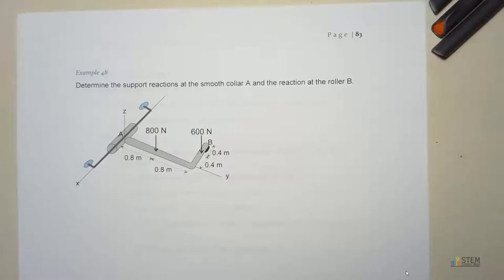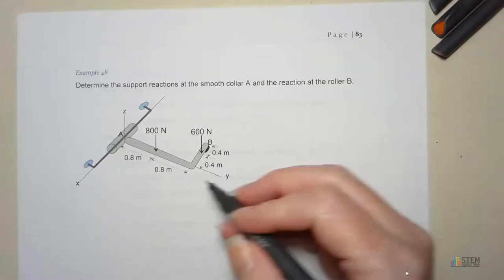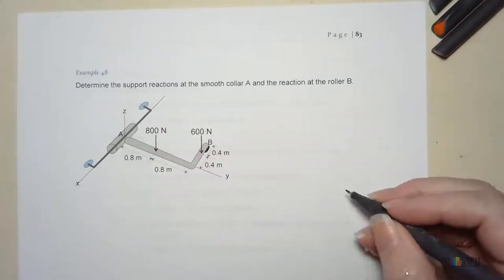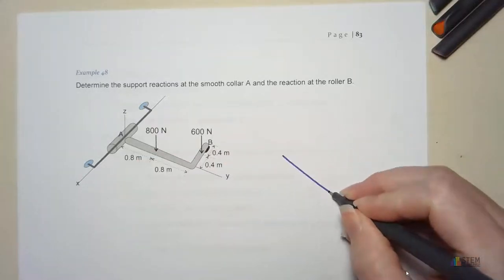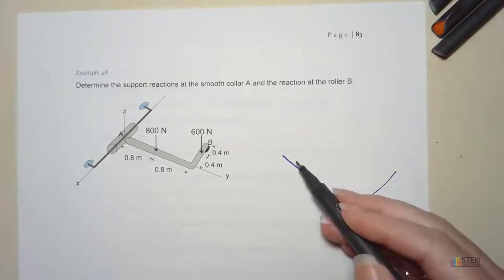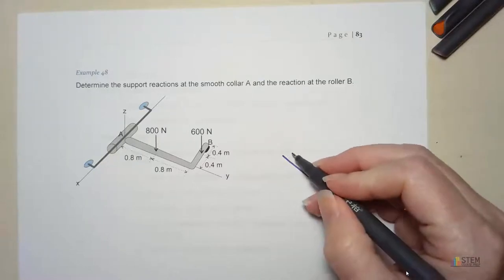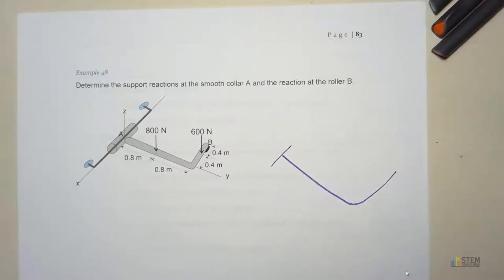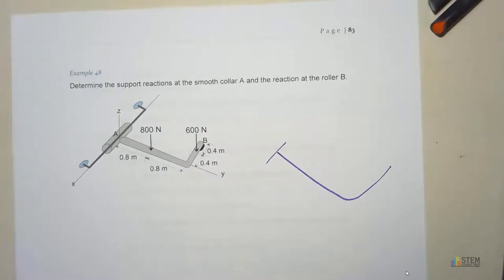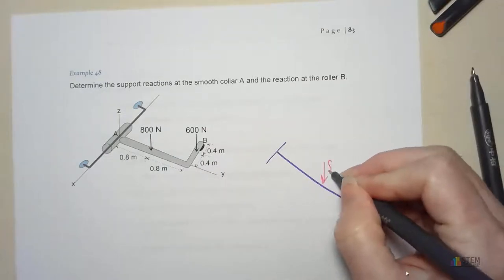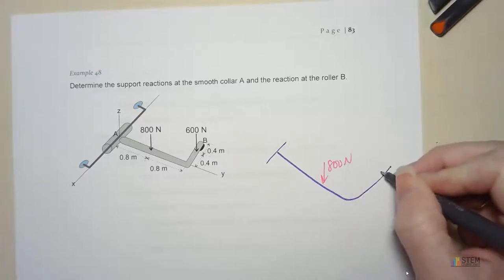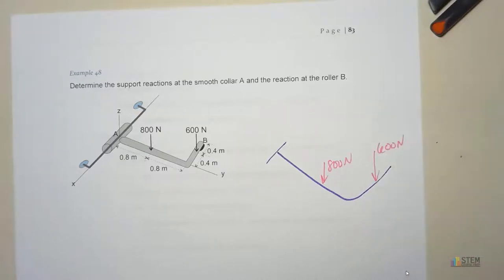First thing we want to do is draw the free body diagram. When we do that, we'll go through and explain what's going on here with that collar. Let's draw the outline. All the forces are going to act on this part. You can draw the little collar there if you want. Let me switch pins. Let's put the forces on here. Let's start out with these two. Those are pretty obvious because they're given. So we have 800 newtons and 600 newtons.